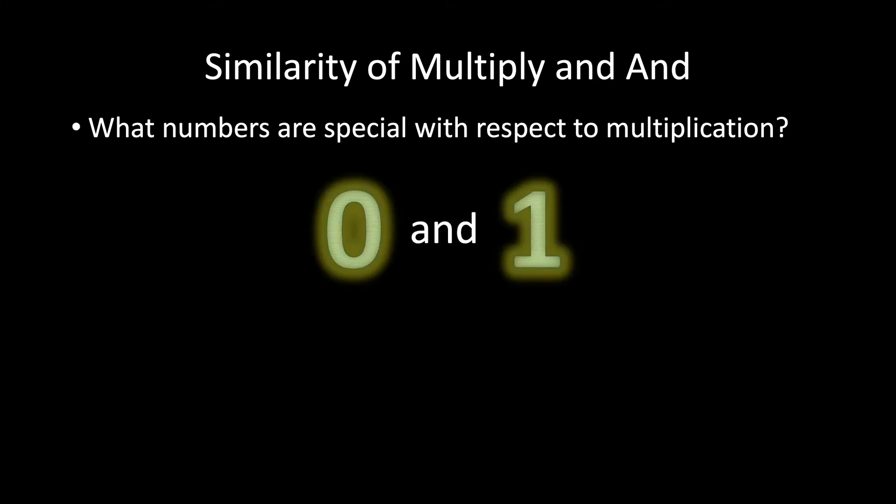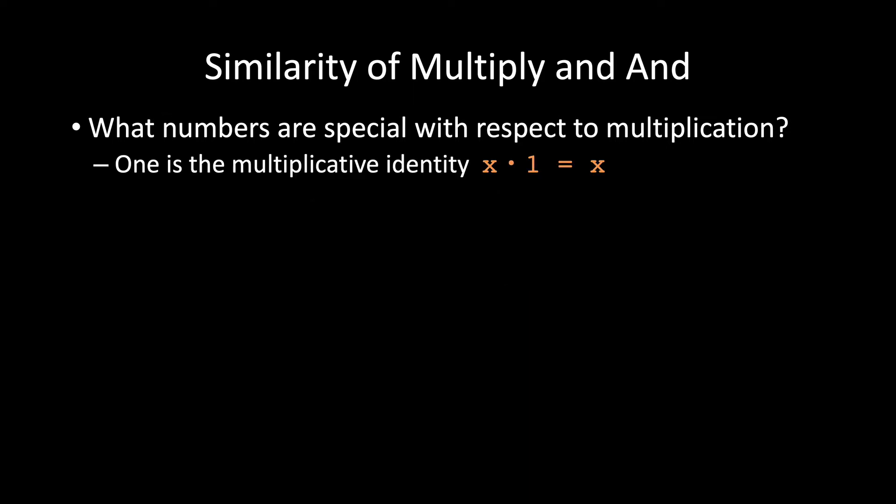This time, both zero and one have special properties. Analogous to zero for addition, one is the multiplicative identity. That is, the number that doesn't change the output. Another way of saying this is that x and true is x, just like x times one is always x.